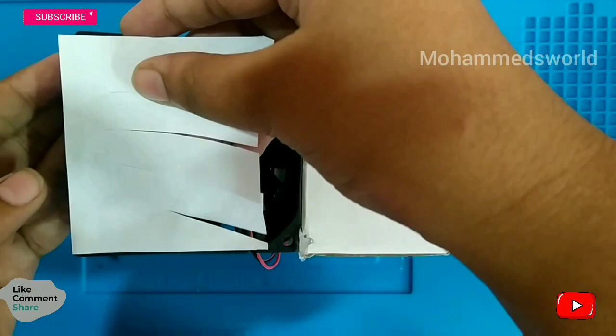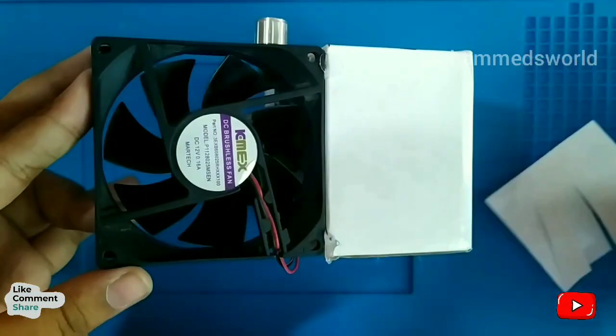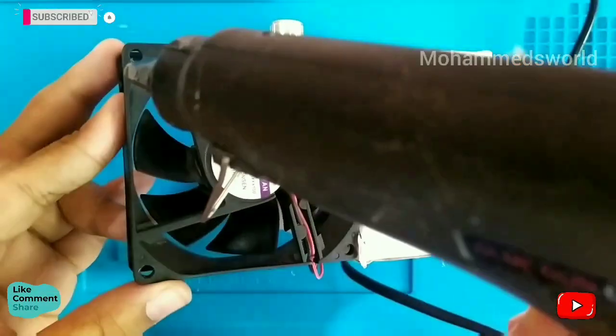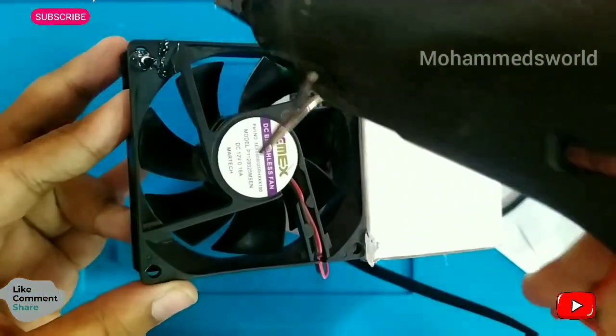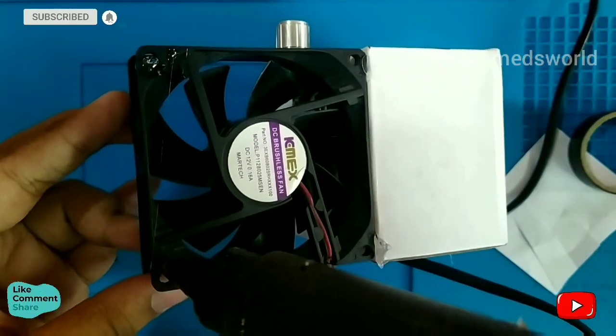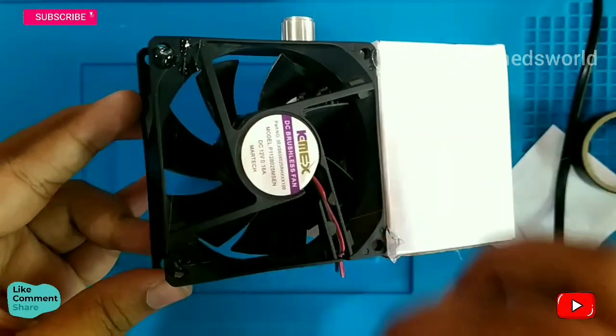Take a paper and keep it in front of the fan from where the air comes. Take glue gun and keep two marks with glue gun and stick the paper on that gum.